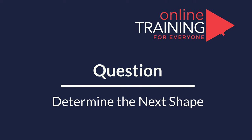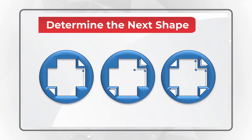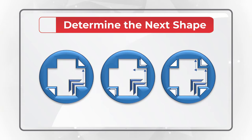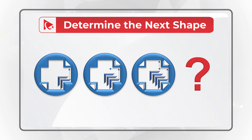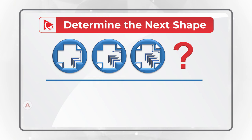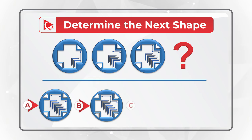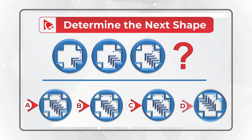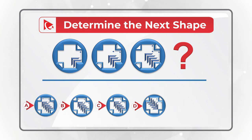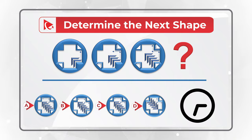And now I have a question for you to test your skills. You're presented with a series of objects, and you need to determine the next object in the sequence. Please choose one of the following four choices: A, B, C, and D. Do you see the correct answer? Please make sure to post your version in comments — this would allow me to give you my feedback. Thanks for participating and good luck.